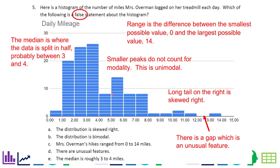The median is the halfway point where the data is split in half. And yeah, it's roughly between three and four, so it's in here somewhere. So the correct answer for this one of a false statement.